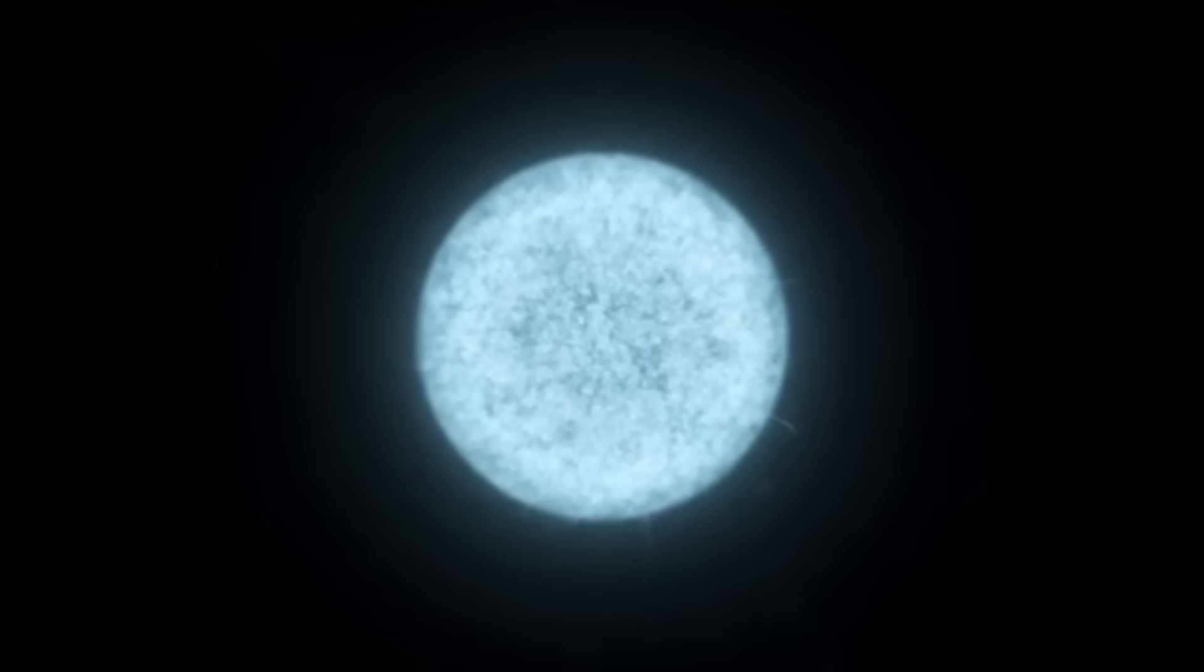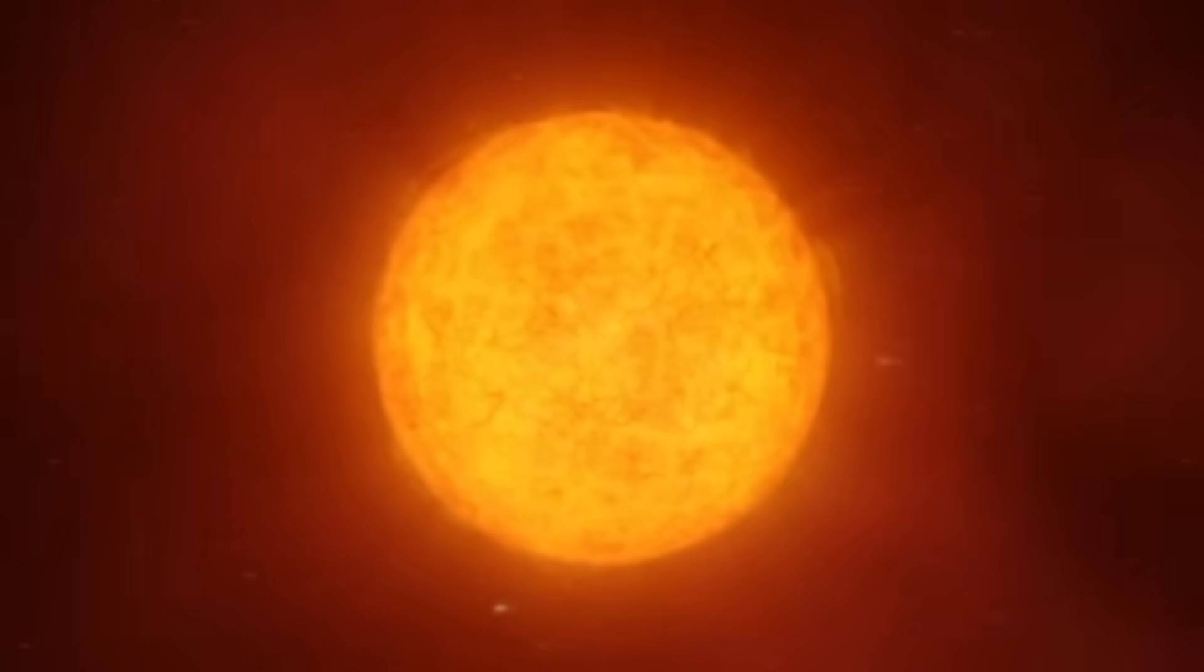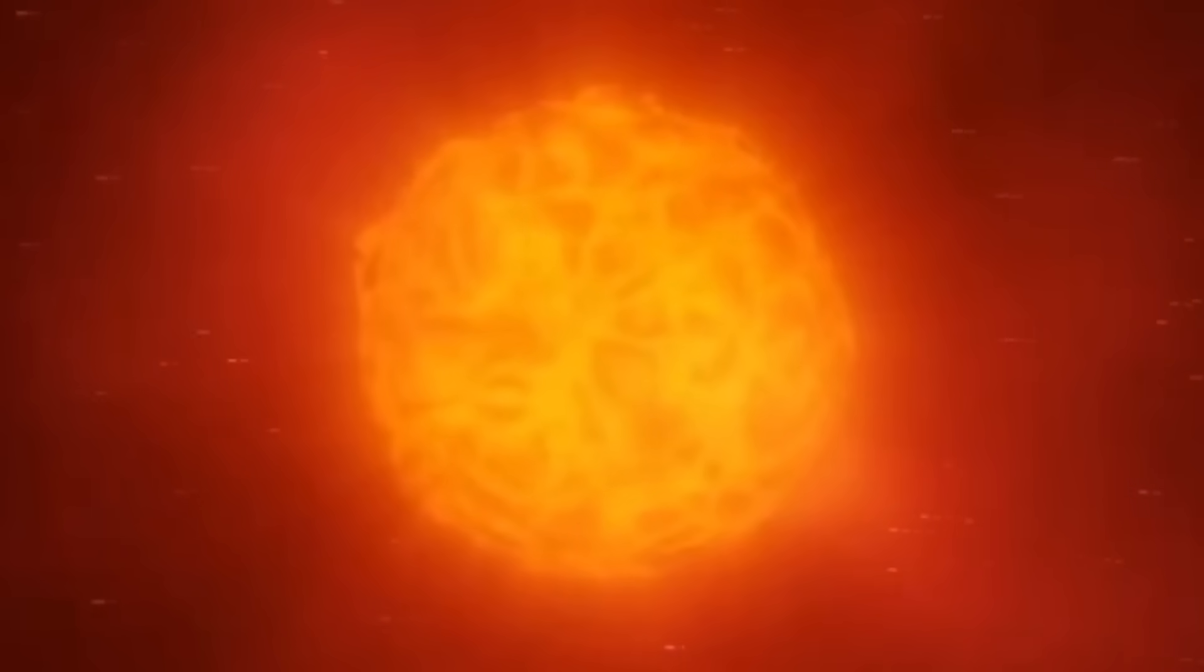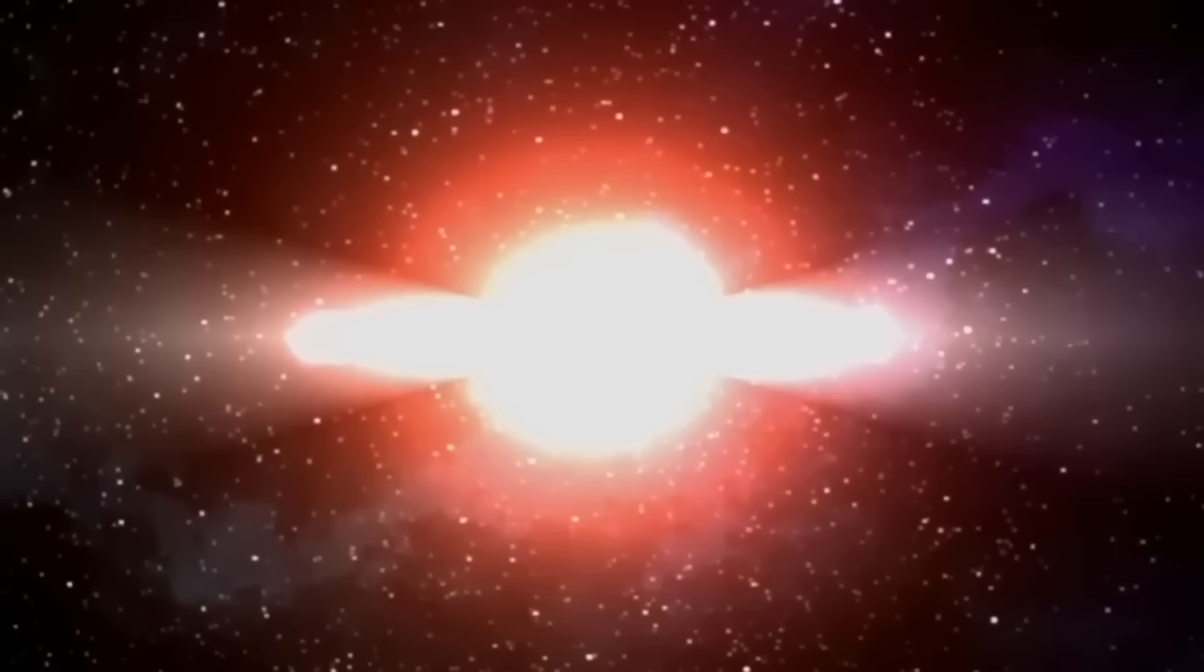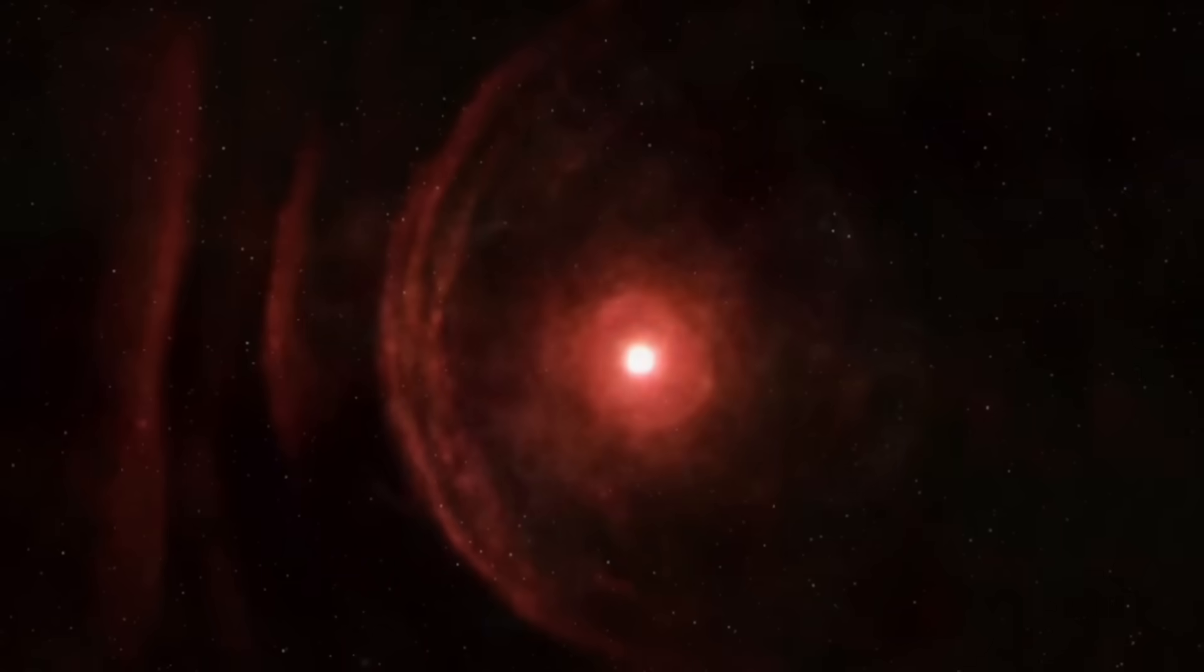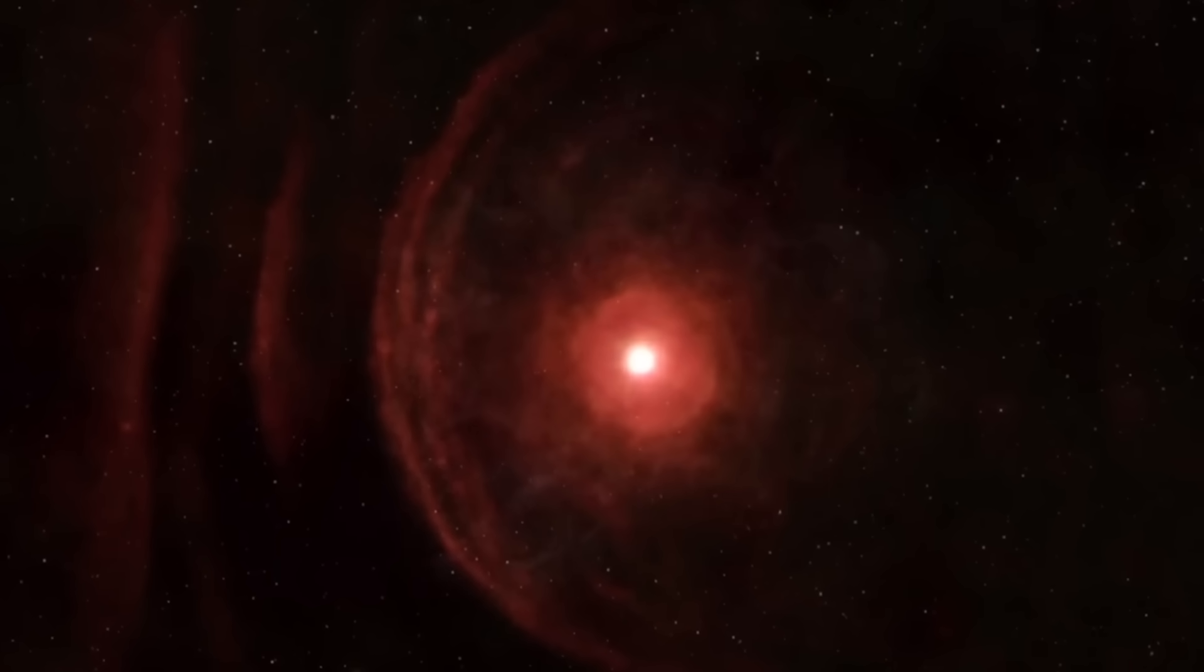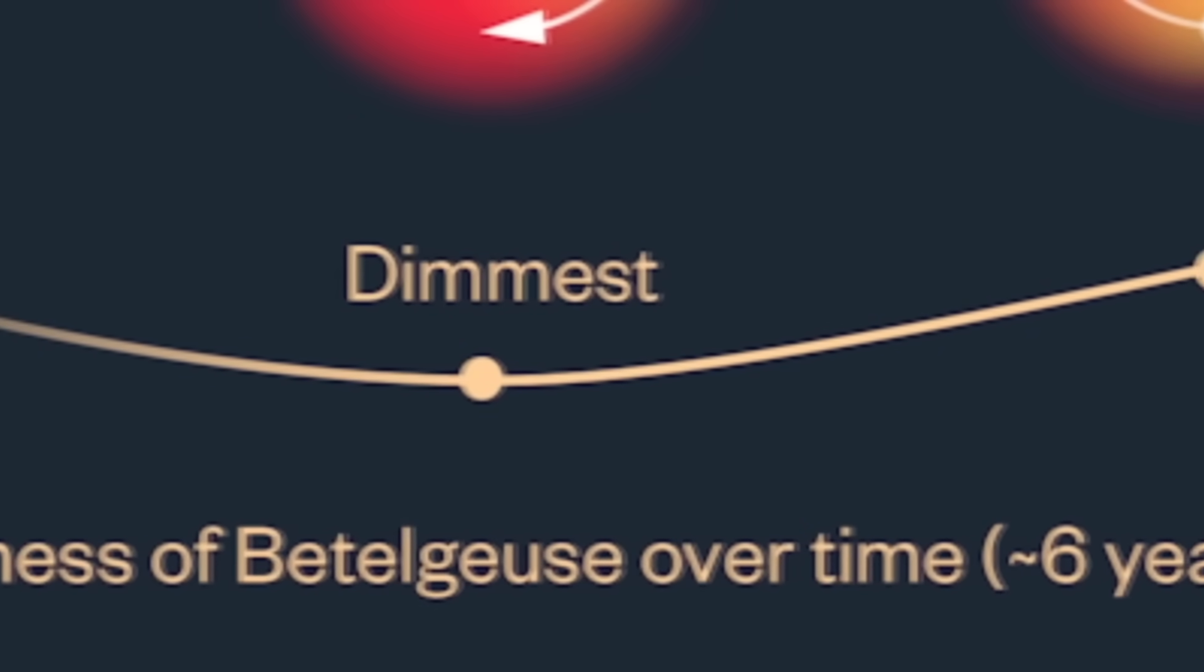In some cases, strange or changing pulsations can hint that the star is entering the final stage of its life. While Betelgeuse's 400-day pulsation alone doesn't mean it will explode soon, it could be a sign that the star is slowly heading toward its ultimate fate, a supernova. These pulsations are like whispers from the star's core, and scientists are listening carefully. And now, let's talk about the third kind of dimming that scientists have seen in Betelgeuse. This one is the most mysterious of all.